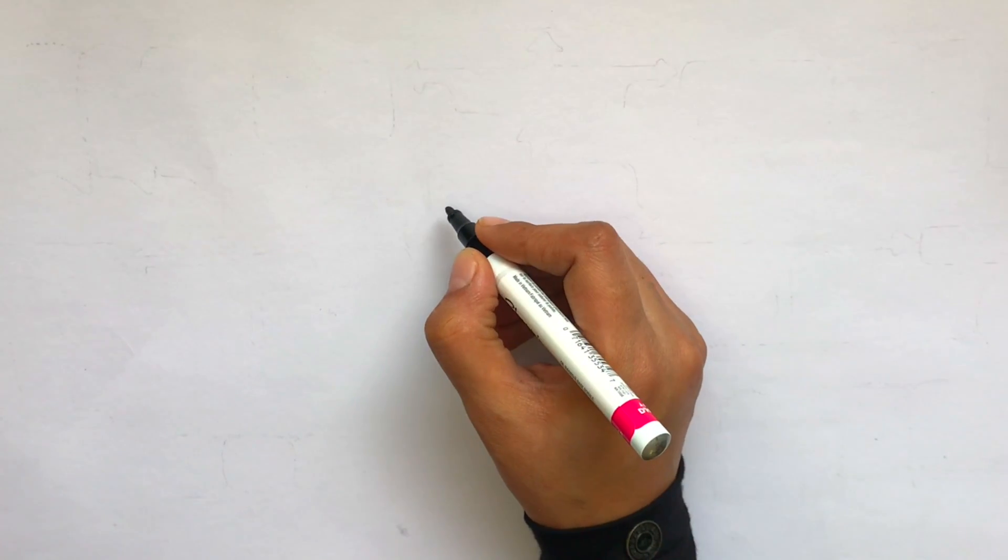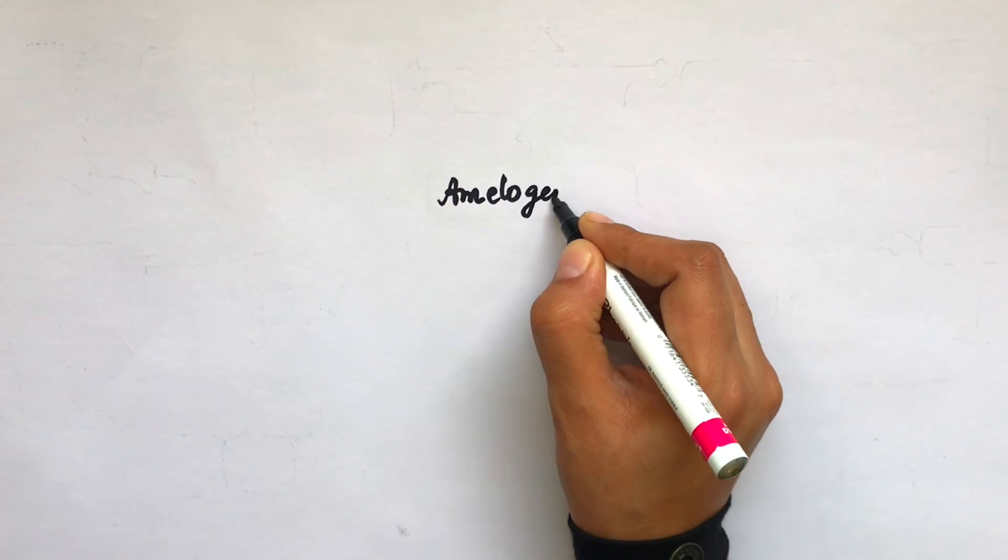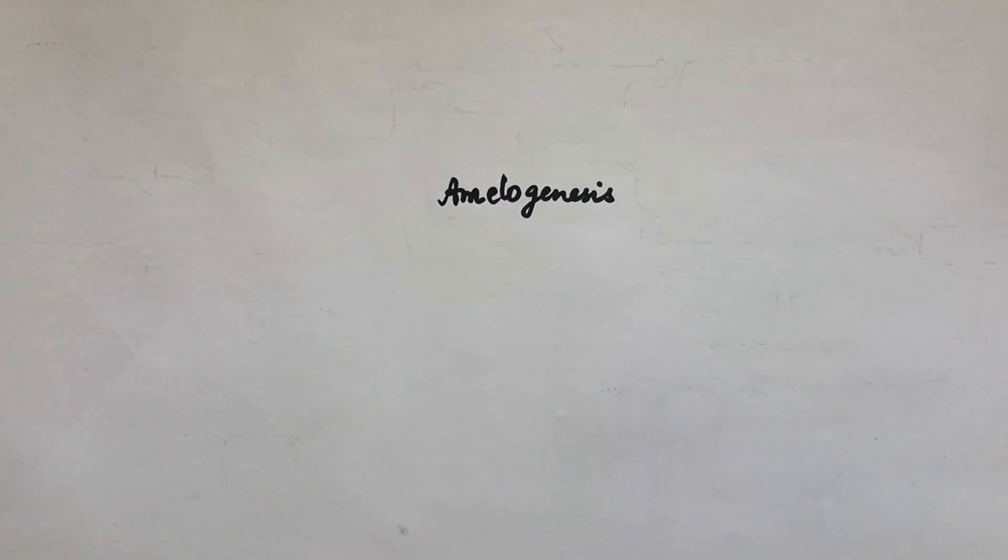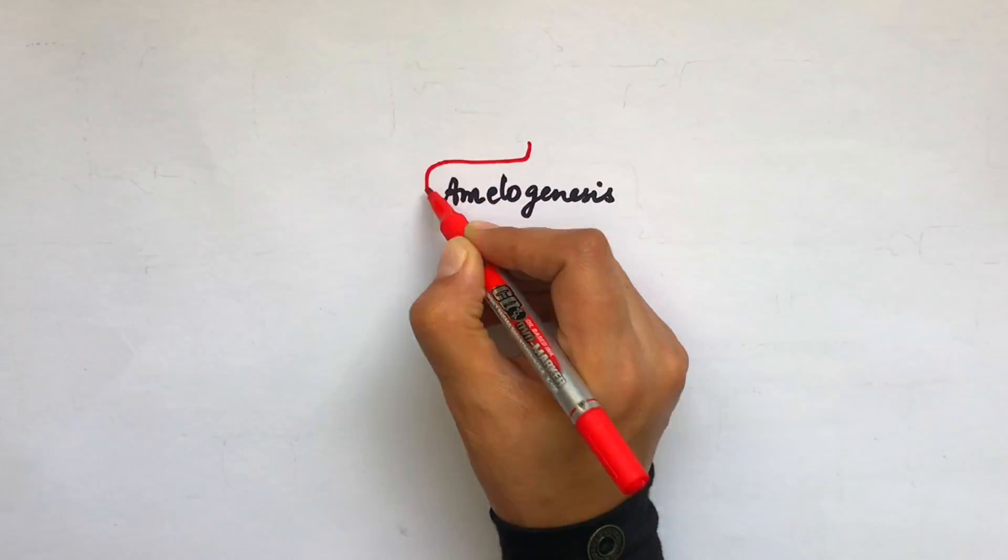To understand the orientation of rod and inter-rod enamel, we must first understand what amelogenesis is. Please watch my previous videos on developmental stages of the tooth to have a much clearer concept on today's topic.